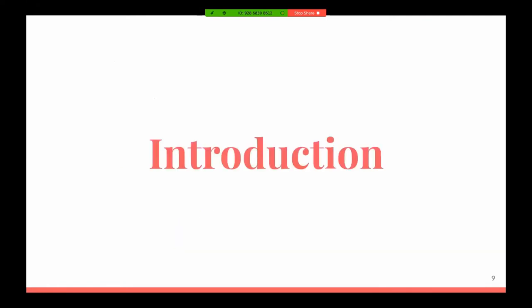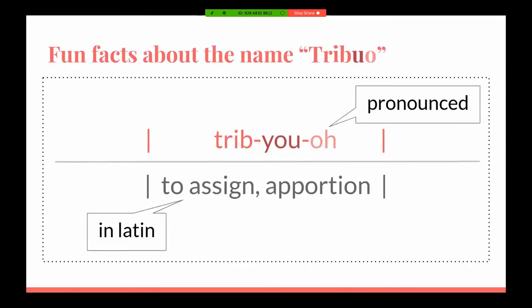Before we get started, it's good to know the pronunciations of things. This is a fun fact from the documentation section of the site. This is how you pronounce the library — it's tri-buhl — three syllables. And this is what it actually means in Latin. Something to remember throughout this presentation and eventually when you start using the library and talking to somebody else about it.